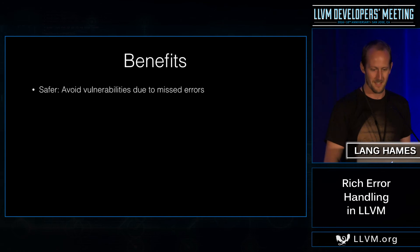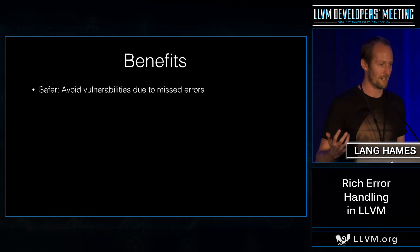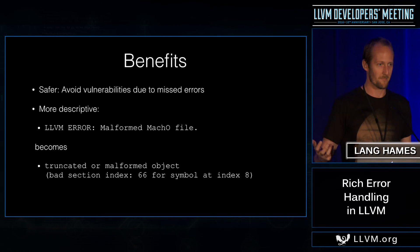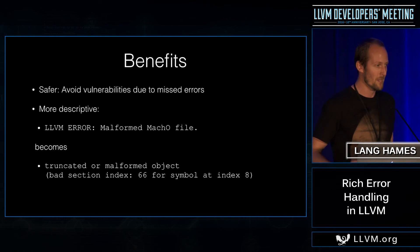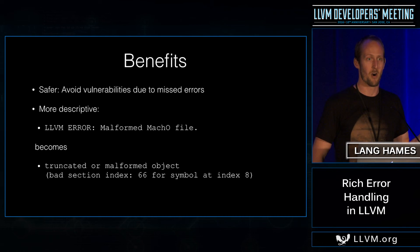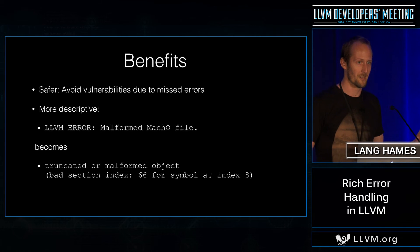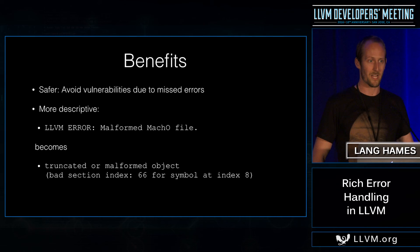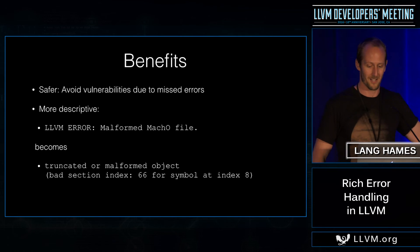The benefits of this system are that it's much safer — you can avoid vulnerabilities and crashes due to missed errors — and it is much more descriptive because you can use user-defined types to describe your errors. This is an example from LLVM objdump. We used to use a std::error_code, and if you gave it a malformed Mach-O file with a particular bug in the header, the error you got back was 'malformed Mach-O file', which is not very helpful. Now with this system, we can describe it in arbitrary detail — the new error message includes the truncated or malformed object with the exact details of what went wrong.